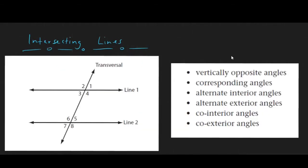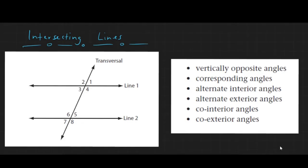Sometimes when lines intersect, they form partial angles between themselves. We will look at a line cutting through two parallel lines. The line that cuts through two parallel lines is called a transversal, which creates these types of angles: vertically opposite angles, corresponding angles, alternate interior angles, alternate exterior angles, co-interior angles, and co-exterior angles.